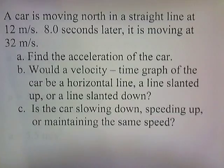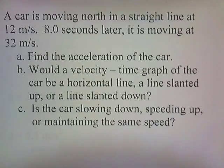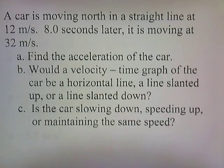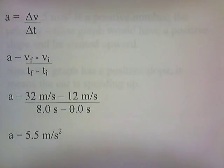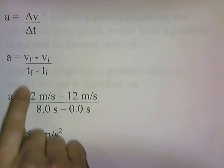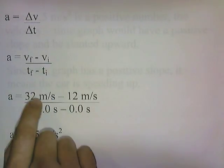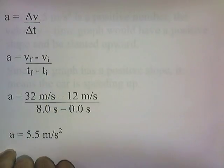Let's try a problem. A car is moving north in a straight line at 12 meters per second. Eight seconds later, it's moving at 32 meters per second. We'll find the acceleration, determine what the velocity-time graph looks like — horizontal, slanted up, or slanted down — and determine whether the car is slowing down, speeding up, or maintaining the same speed. Here's our formula for calculating acceleration: change in velocity over time, or final velocity minus initial velocity over final time minus initial time.